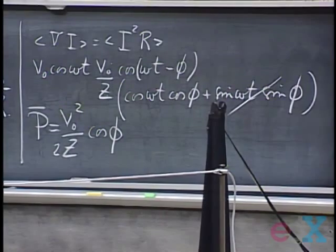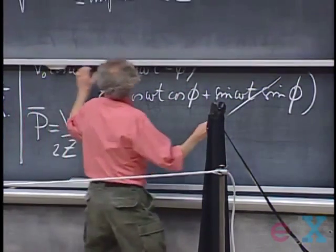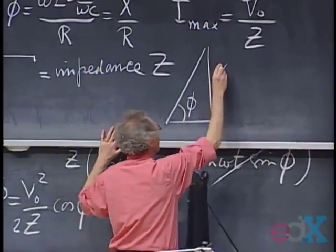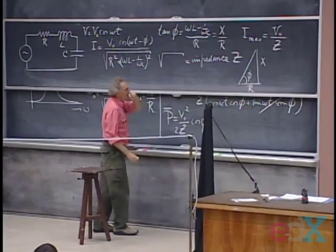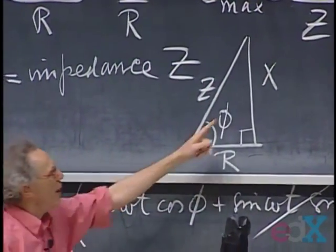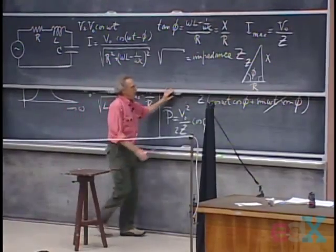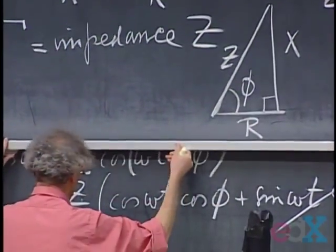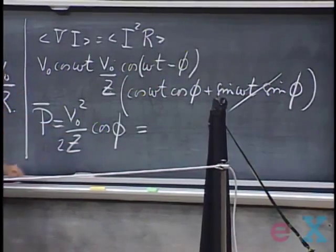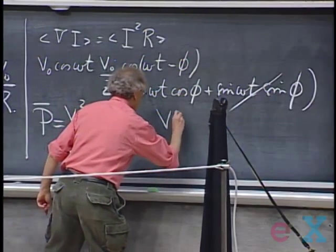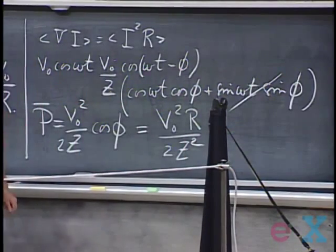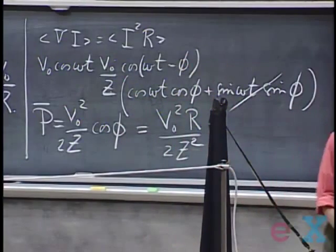To eliminate cos(phi), recall that tan(phi) = X/R. Treating this as a right triangle with opposite side X and adjacent side R, the hypotenuse is Z = sqrt(X-squared + R-squared), so cos(phi) = R/Z. Substituting, the time-average power becomes V_0-squared times R divided by 2*Z-squared.